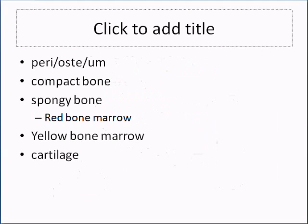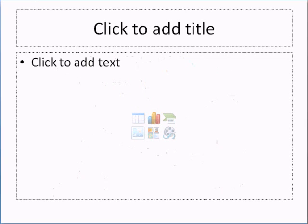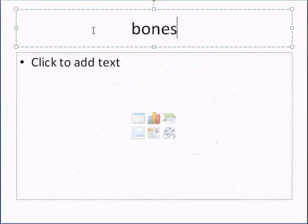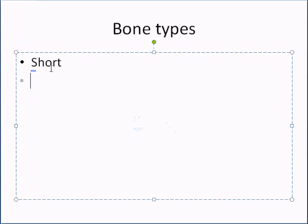Let's talk about bone types. Typically when we refer to bones we look at four major types: short bones, long bones, flat bones, and irregular bones — meaning exactly what it sounds like, the shape is irregular.